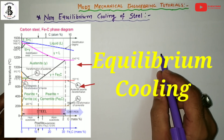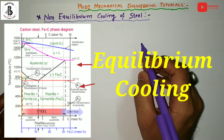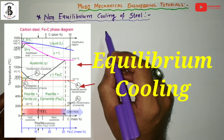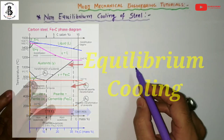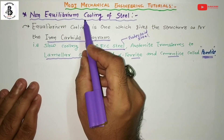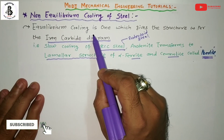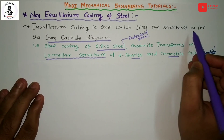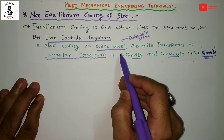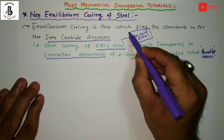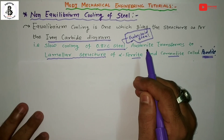In the iron-carbon diagram, which is an equilibrium diagram, you consider equilibrium cooling and get different phases like pearlite, alpha ferrite, and cementite. But when performing non-equilibrium cooling of steels, you get different forms of steel. For equilibrium cooling, the process gives different structures as per the iron-carbon diagram. For slow cooling of 0.8% carbon steel — the eutectoid steel — details on the eutectoid reaction can be found in the description box.